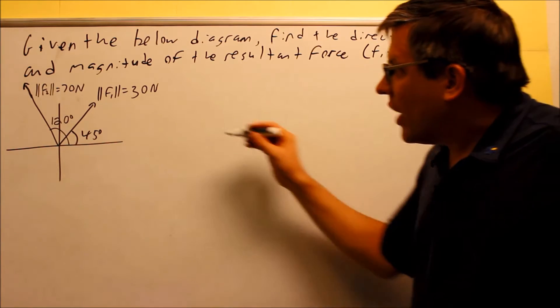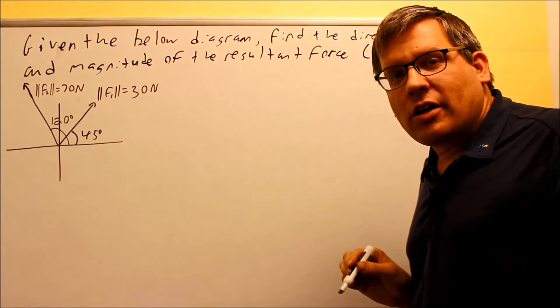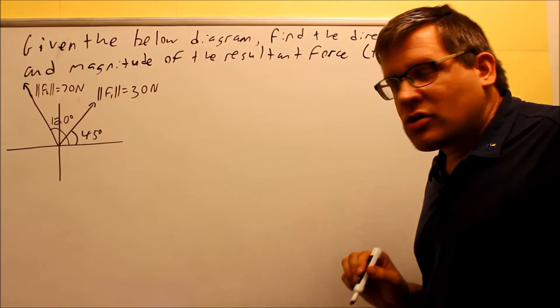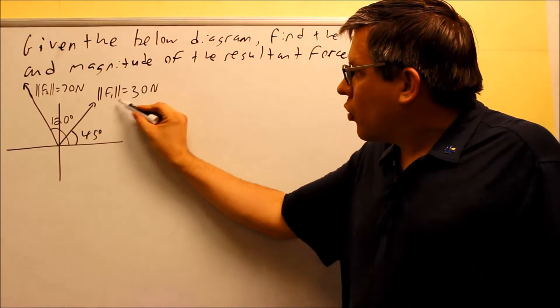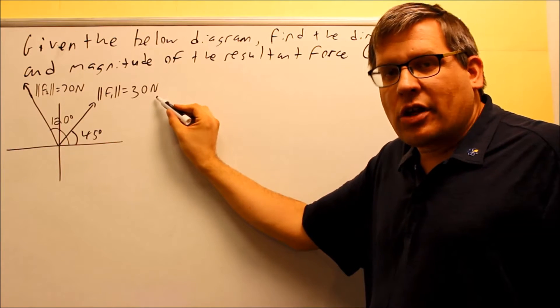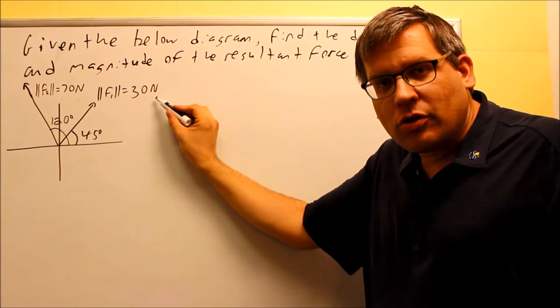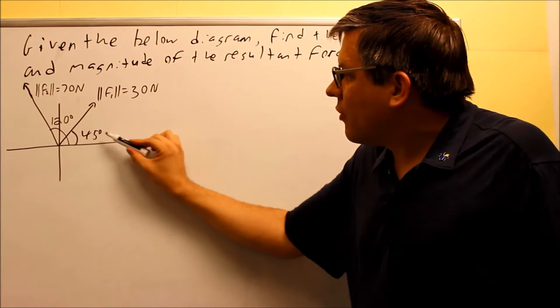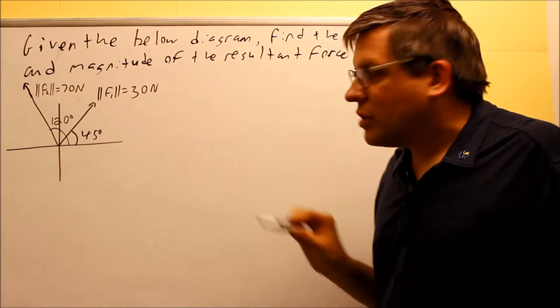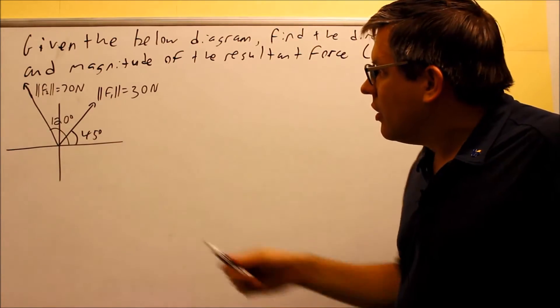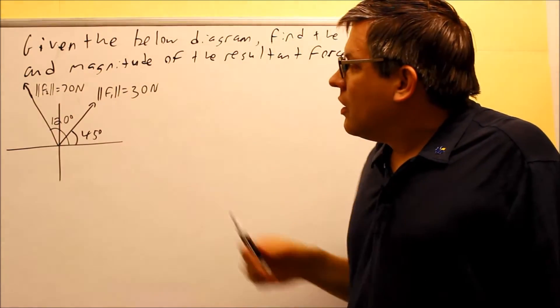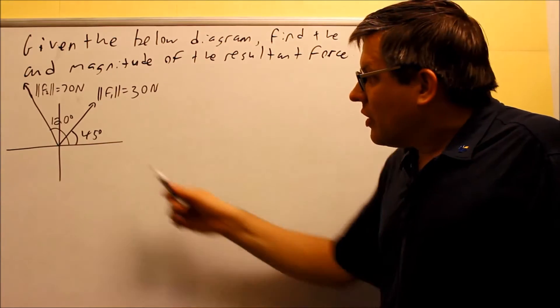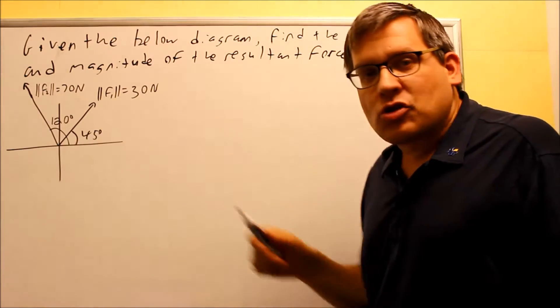Now, in order to do that, we have to take what information is provided here and turn it into components. So, we're given that force 1, we have 30 and there's an N next to it. Now, N stands for newtons. It's a unit of force that you'll talk more about in physics. That force is being applied at a 45 degree angle. So, that's the first one. Now, the second one, we have F2. That's 70 newtons and that's being applied at 120 degrees.